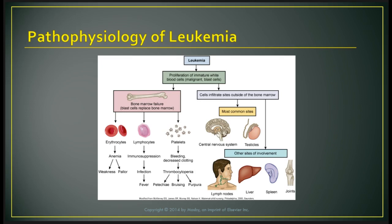When cells infiltrate outside of the bone marrow, the most common sites are the brain and testicles. Other sites of involvement include the lymph nodes, liver, spleen, and joints.